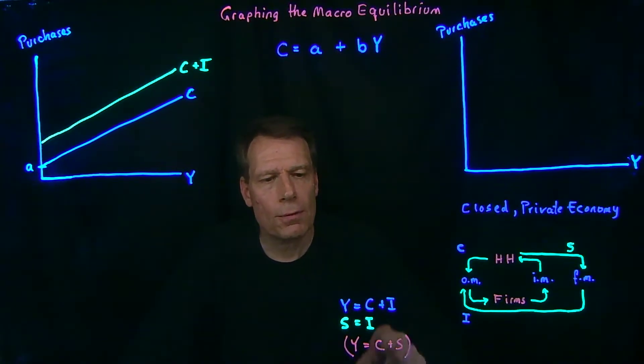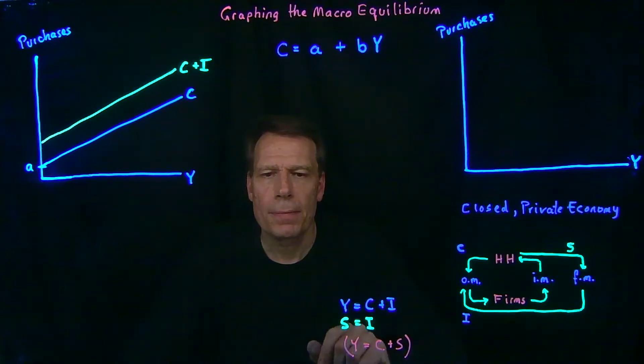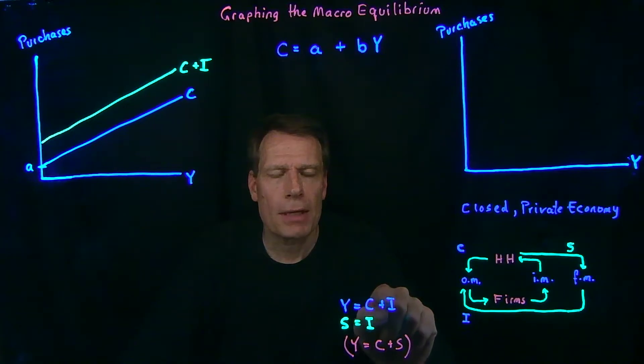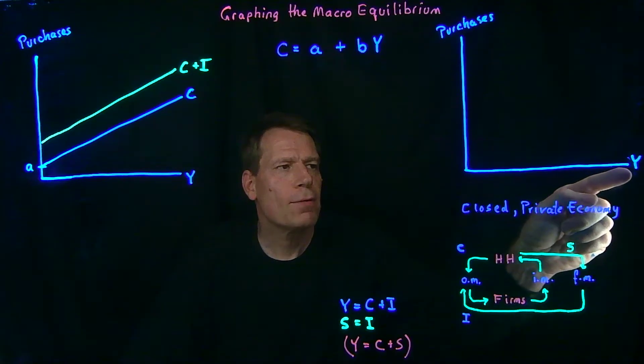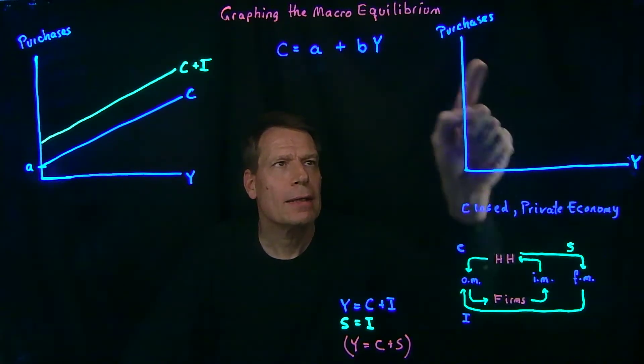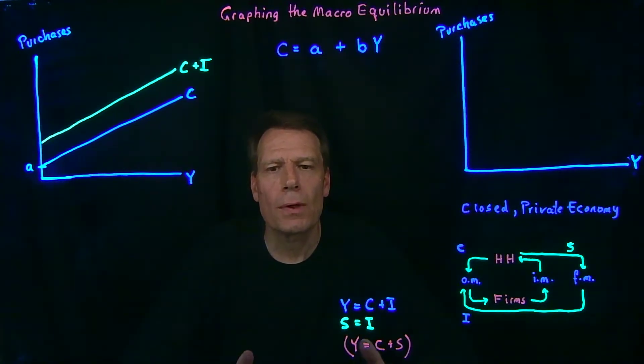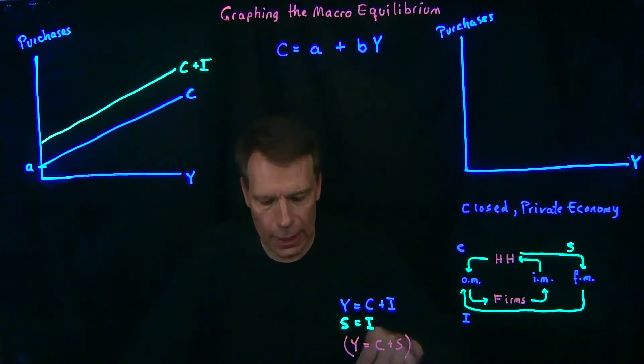Now we want to graph this equation. This equation says that GDP is equal to consumption plus investment. In other words, GDP is equal to purchases. So where in this graph is Y equal to purchases? Well, it's along the 45 degree line.